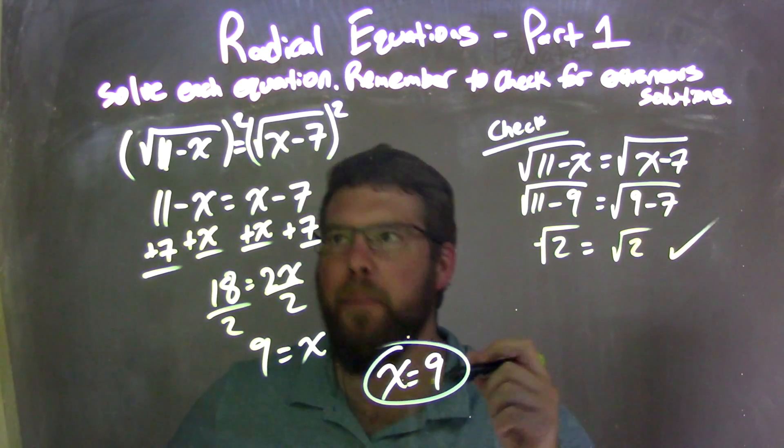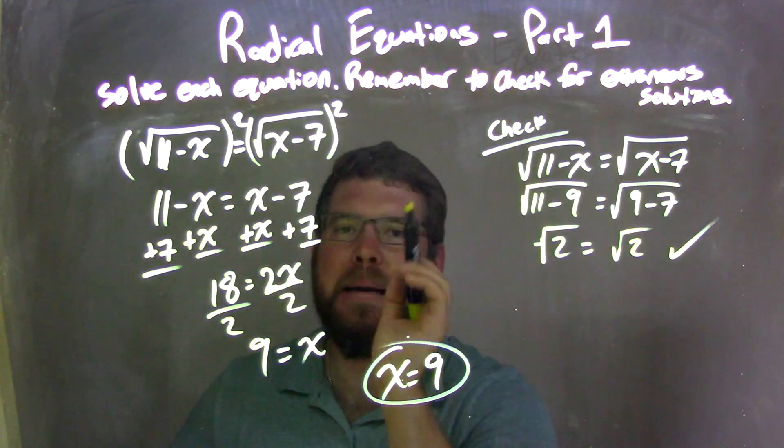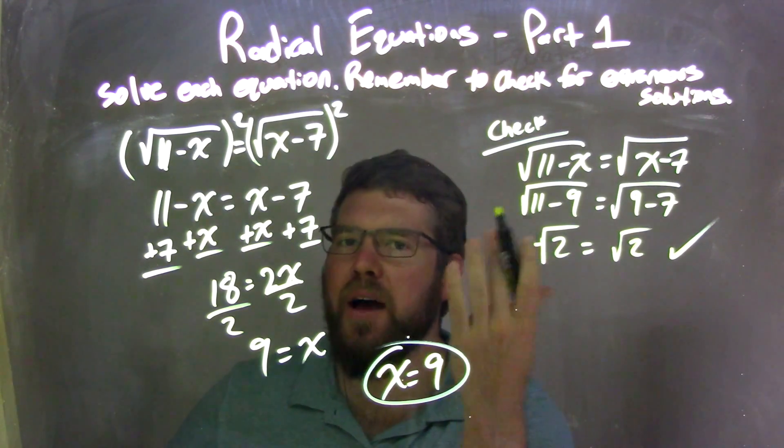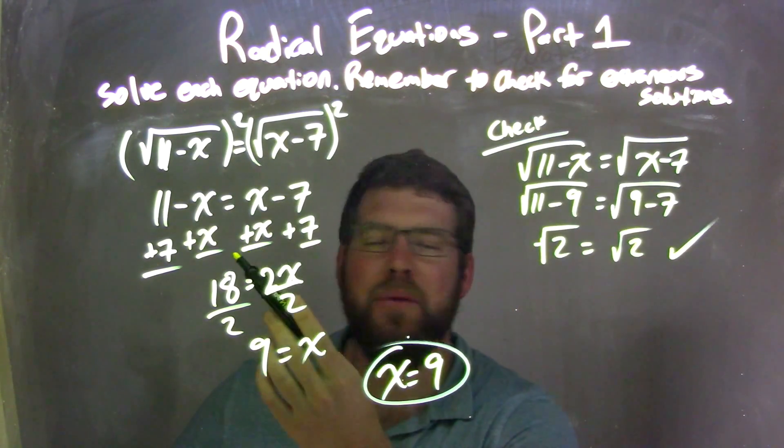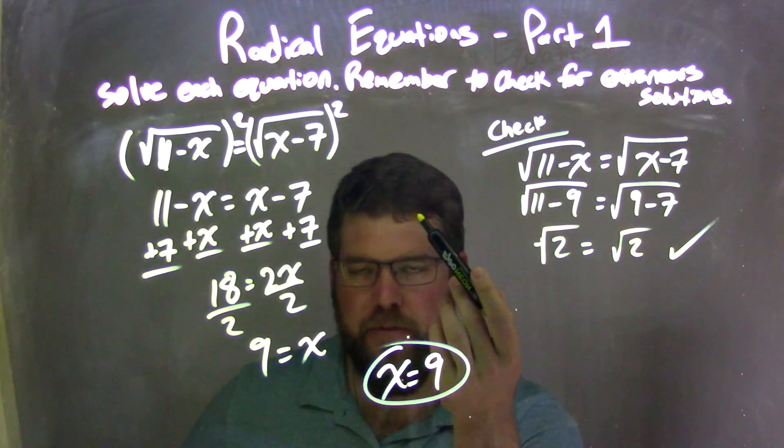Let's recap here. We're given the square root of 11 minus x equals the square root of x minus 7. I square both sides, eliminating the square root and giving me just what's on the inside. 11 minus x equals x minus 7.